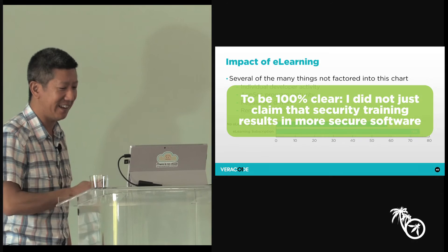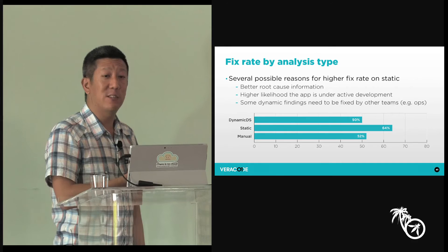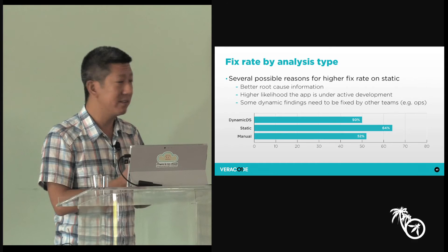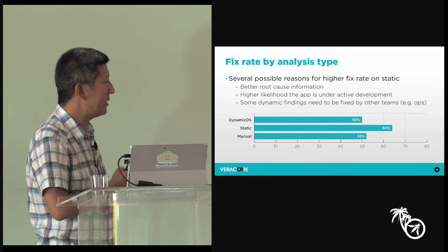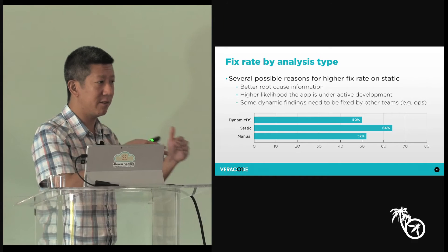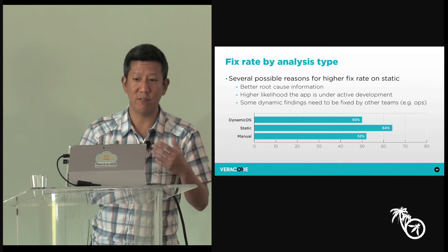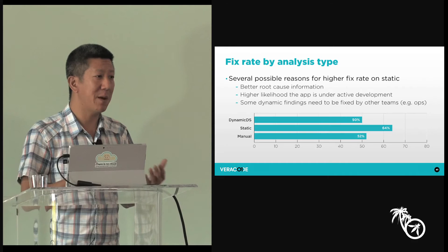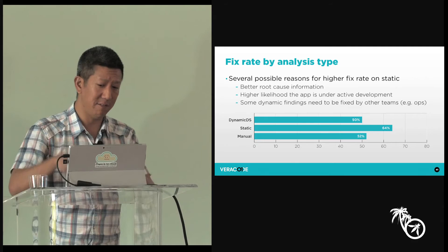Finally, we looked at fixed rate by analysis type — static, dynamic, and traditional pen testing. Remediation rates were highest for static analysis, though not by a huge amount. We think this probably has something to do with the fact that static analysis gives you the line of code, file name, and points to the exact root cause of where the flaw occurred. Whereas with dynamic or pen test, a developer has to figure out the location themselves. So there was a small but meaningful variance there.